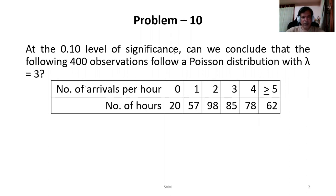At 0.1 level of significance, can we conclude that the following 400 observations follow a Poisson distribution with lambda equal to 3? Lambda is that uni parameter of the Poisson distribution. Here the data is given as number of arrivals per hour: 0, 1, 2, 3, 4, greater than or equal to 5. The number of hours is given as 20, 57, 98, 85, 78, 62, which total to 400. We already know that we have to check whether this data has come from a population which follows a Poisson distribution or not. So of course we have to use the goodness of fit test.